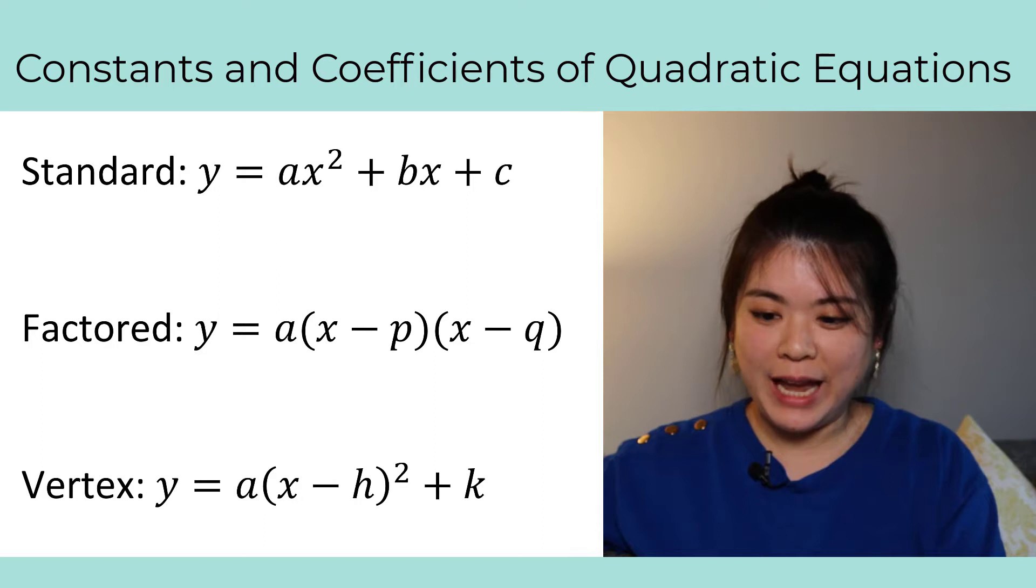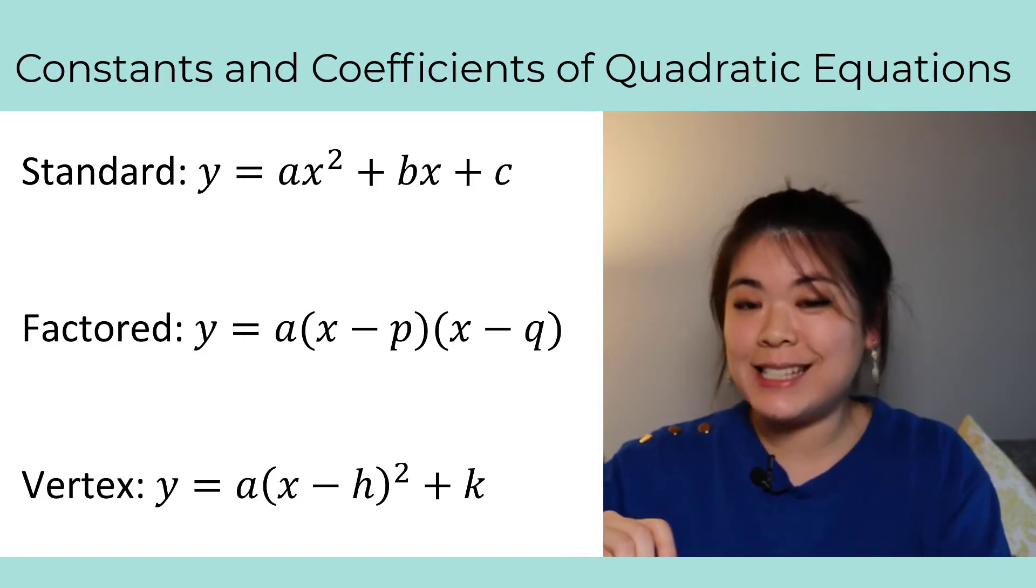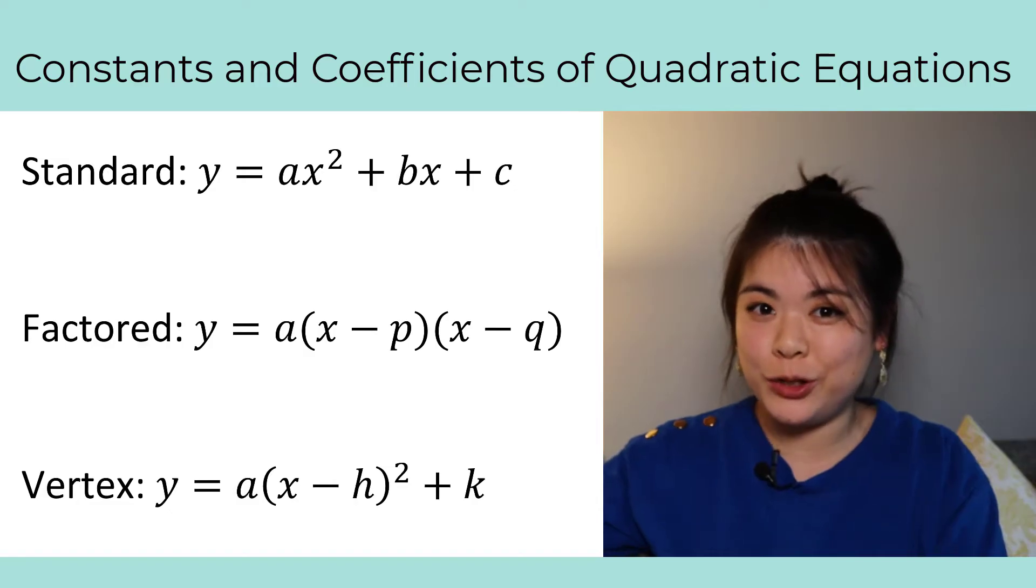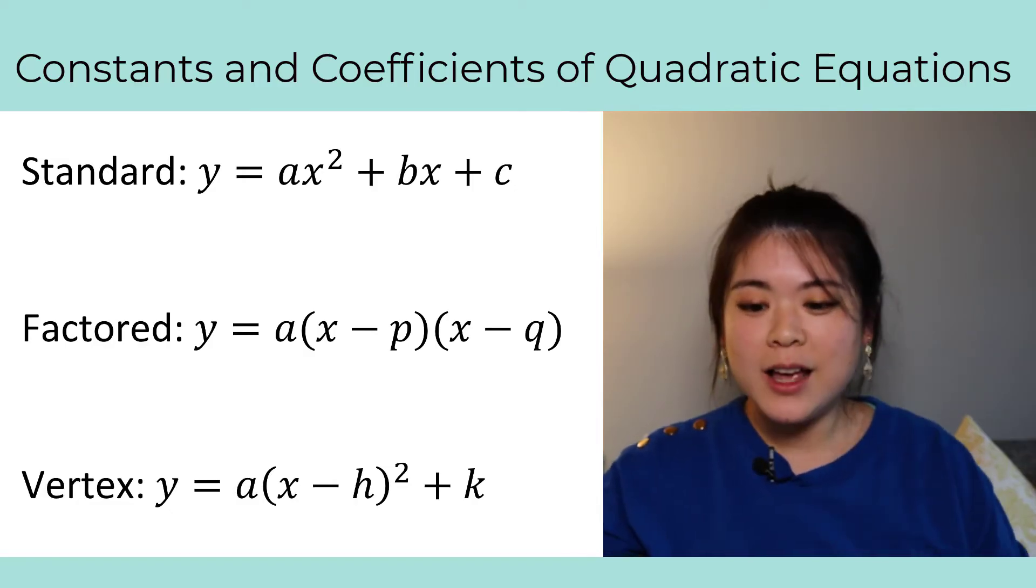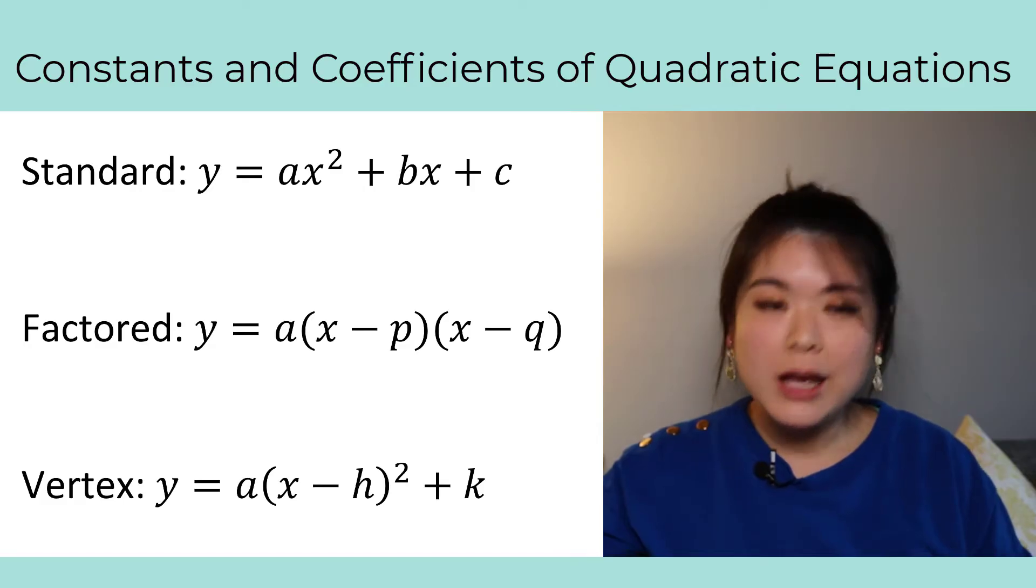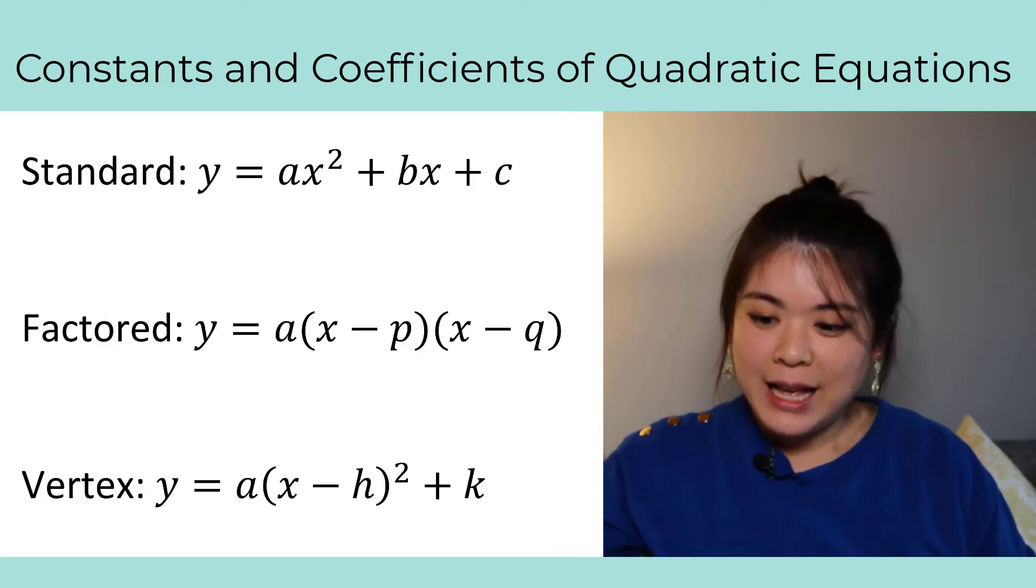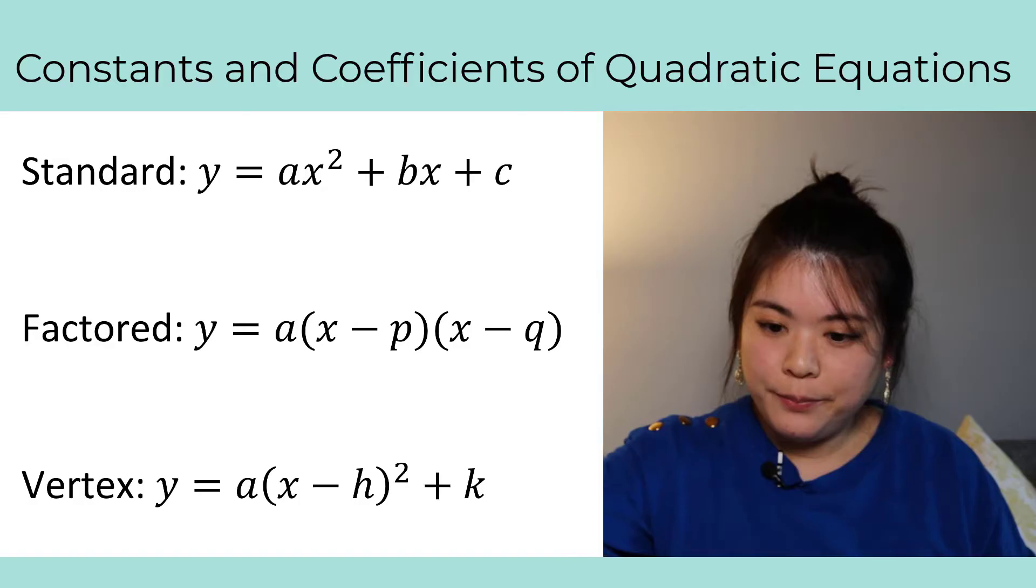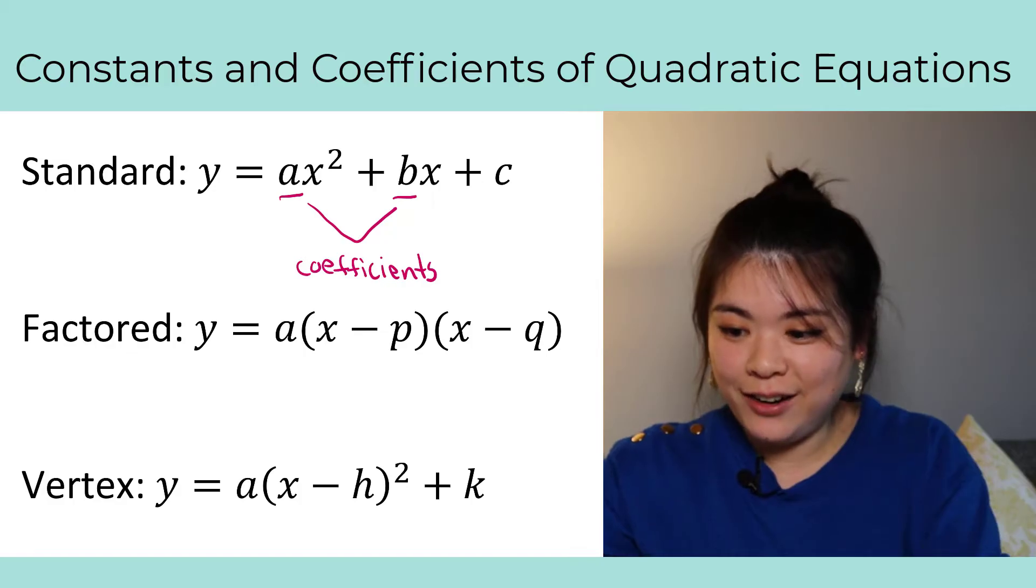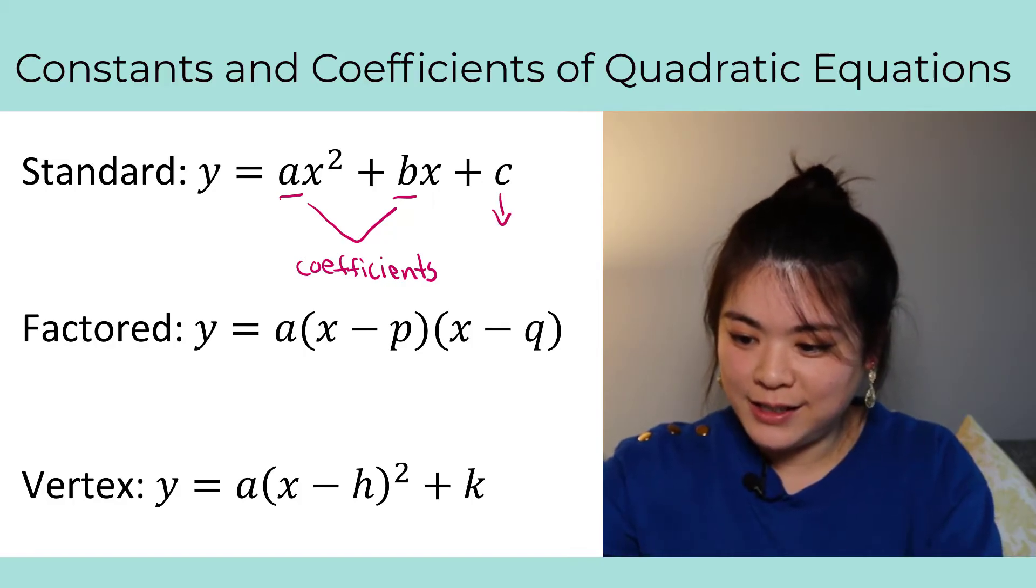Okay, we're going to start with the most basic, the standard form. This is the form that you saw first when you were introduced to parabolas and quadratics. So the standard form of a quadratic equation is ax squared plus bx plus c. Now a and b here, these are called coefficients, and c here, this is the constant.